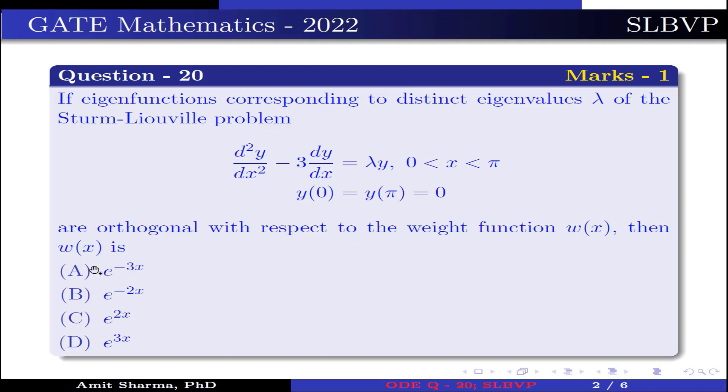...then w(x) is: option (A) e^(-3x), option (B) e^(-2x), option (C) e^(2x), option (D) e^(3x).